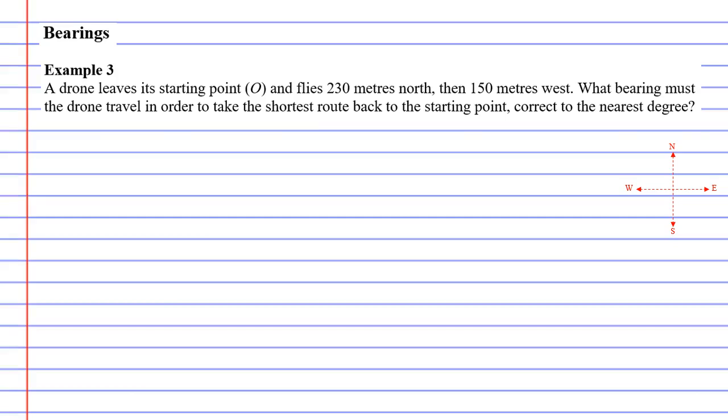In this video we're going to complete example three on bearings. It says a drone leaves its starting point O and flies 230 meters north, then 150 meters west. What bearing must the drone travel in order to take the shortest route back to the starting point, correct to the nearest degree?